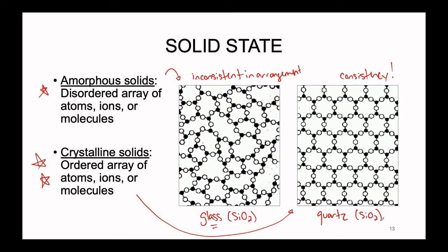Quartz forms over much longer periods of time, giving the atoms in this structure more time to fit into a structure that is going to be consistent in the long range and a little bit more stable and even more rigid as a result. As I said, we are going to be focusing in this class mostly on the crystalline solids due to their long-range consistency. Their properties are also going to be a little bit more consistent as a result.